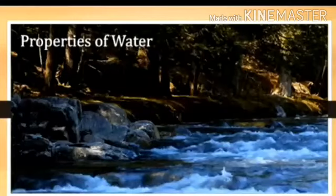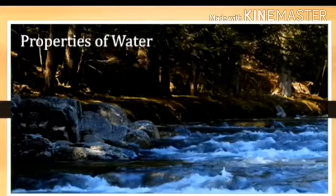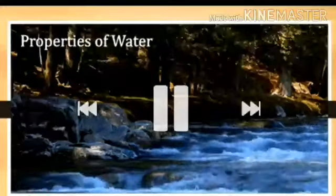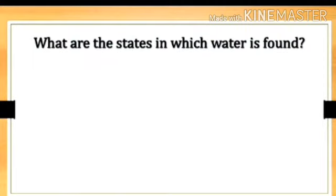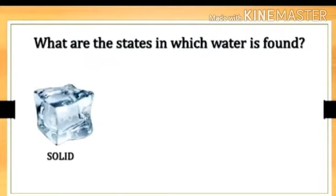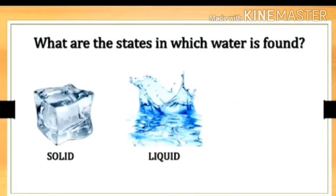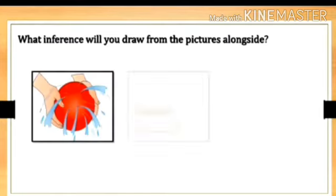As we know, water can flow easily — it has the flowing property. Water is in a liquid state at ordinary conditions, and that is a property of water. Now, what are the states in which water is found? The first state is solid — ice form. The second is liquid — water form. The third is gas — vapor form.